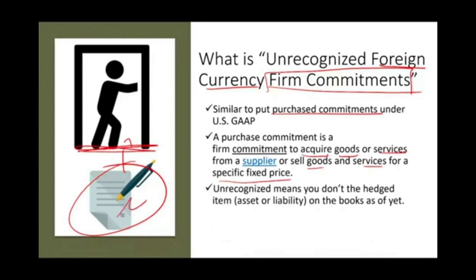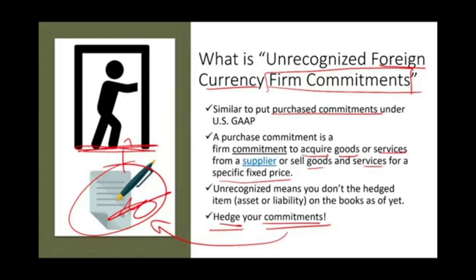All that you did is sign the contract. And now you have to protect that signature because it requires you to either pay in a foreign currency or receive a foreign currency, which you have to translate. So you are hedging your commitment — your signature — because you cannot get out of this contract. You don't have an asset or a liability, no receivable and no payable.